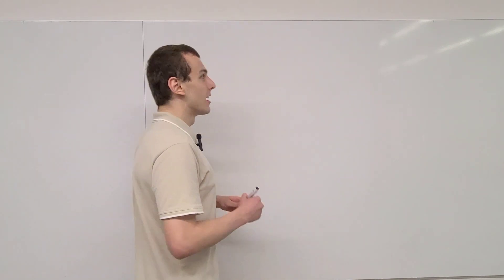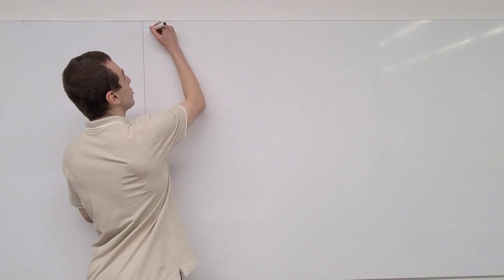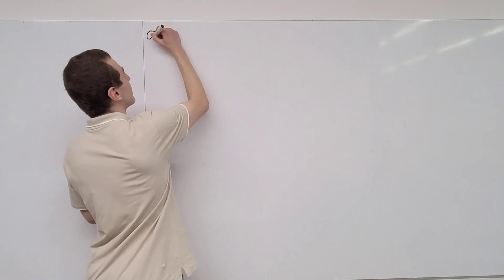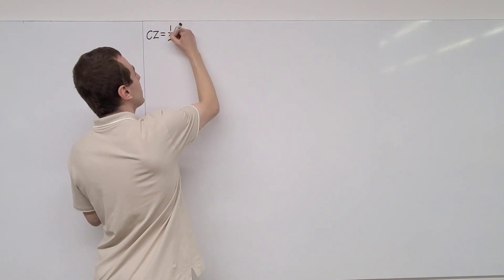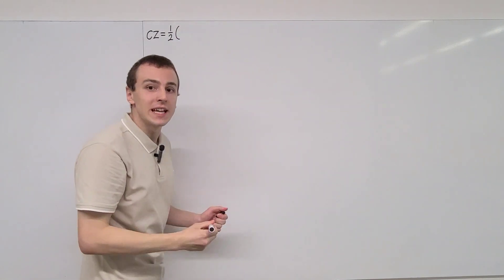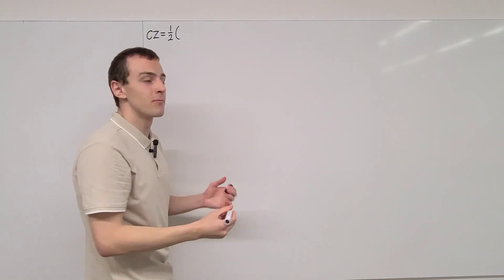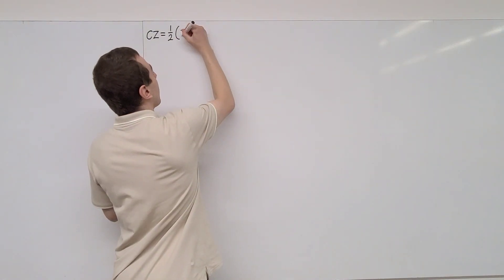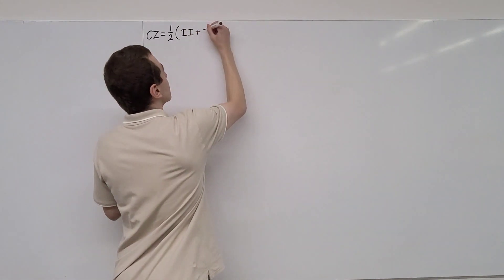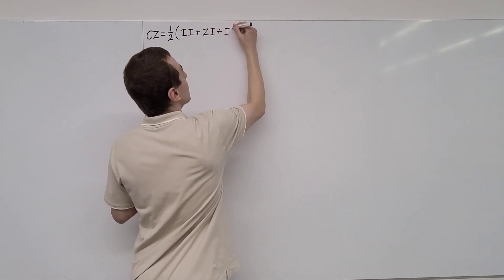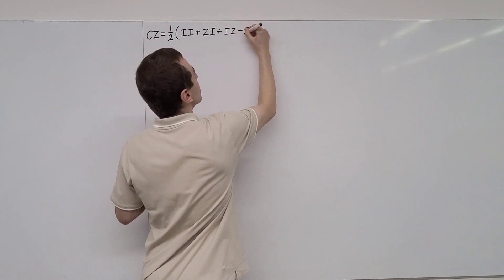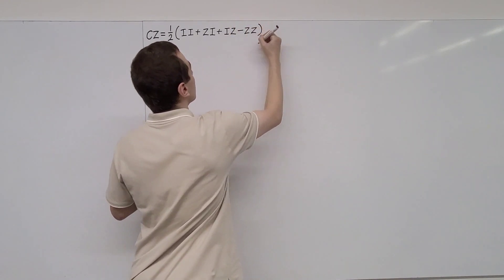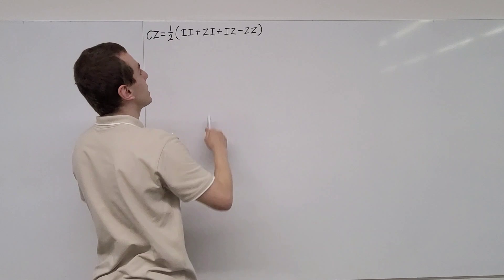Let's investigate the diagonal matrix representation of the controlled Z-gate. The controlled Z-gate is denoted by CZ. It can be expressed as a linear combination of Pauli matrix tensor products. We're going to have the terms II plus ZI plus IZ minus ZZ, so there are four terms in this linear combination.